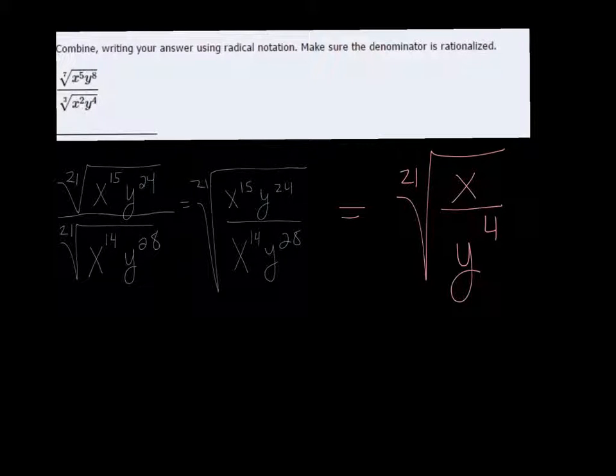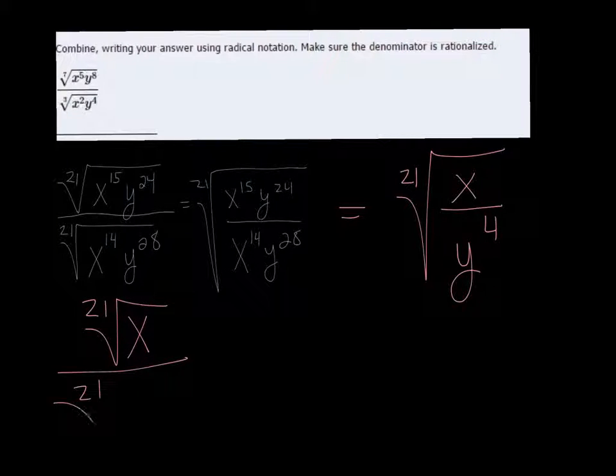So it's saying that we need to rationalize the denominator. So right now we have the 21st root of x on top, and the 21st root of y to the 4th on the bottom. To get that radical out of the bottom, I need to bump that 4 up so that it's a multiple of 21. So basically what is 21 minus 4?